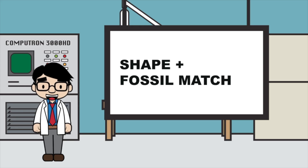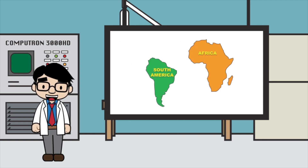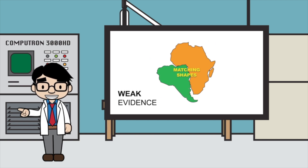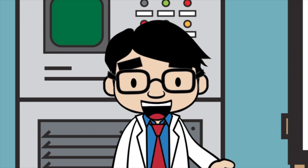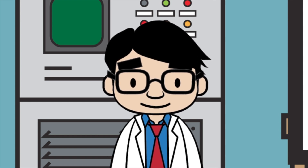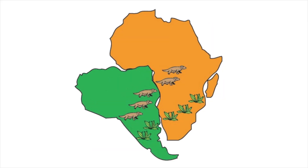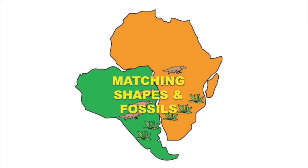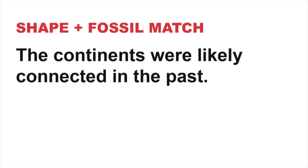Let's go over shape and fossil match evidence. The continent shapes match — South America and Africa, if put together, have matching shapes, but this is weak evidence at best. However, we also have matching plant fossils and animal fossils. We have identical land animal fossils on both South America and Africa, and the same is true for some plant fossils. When you line up the continents, not only do the shapes match, but the positions of the fossils also match. This is strong evidence since plants and land animals can't cross the ocean, supporting the idea that the continents were likely connected in the past.